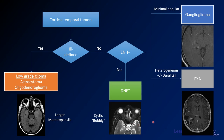Here's a framework for corticotemporal tumors. First, consider whether the lesion is ill-defined — if so, think about low-grade gliomas like astrocytomas and oligodendrogliomas, which tend to be larger and more expansile. If it's well-defined, check for enhancement: with enhancement, consider ganglioglioma, which tends to be a little cystic lesion with some enhancement. If it's more heterogeneous with a dural tail, think PXA. With no enhancement and a cystic bubbly lesion, think DNET. In practice there's much overlap, so it can be hard to tell without a biopsy.